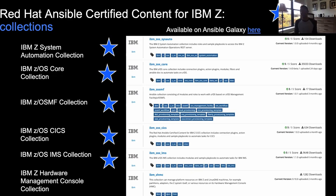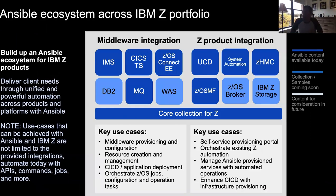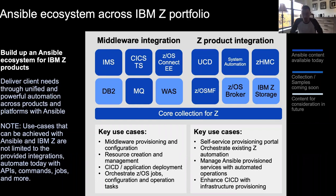Those are our six collections available, five of which are on Automation Hub today. We definitely have more planned for the future. Looking across the IBM Z portfolio, there are many different technologies you can work with Ansible for. My big message here is: don't limit yourself to only what the specific collections support today.